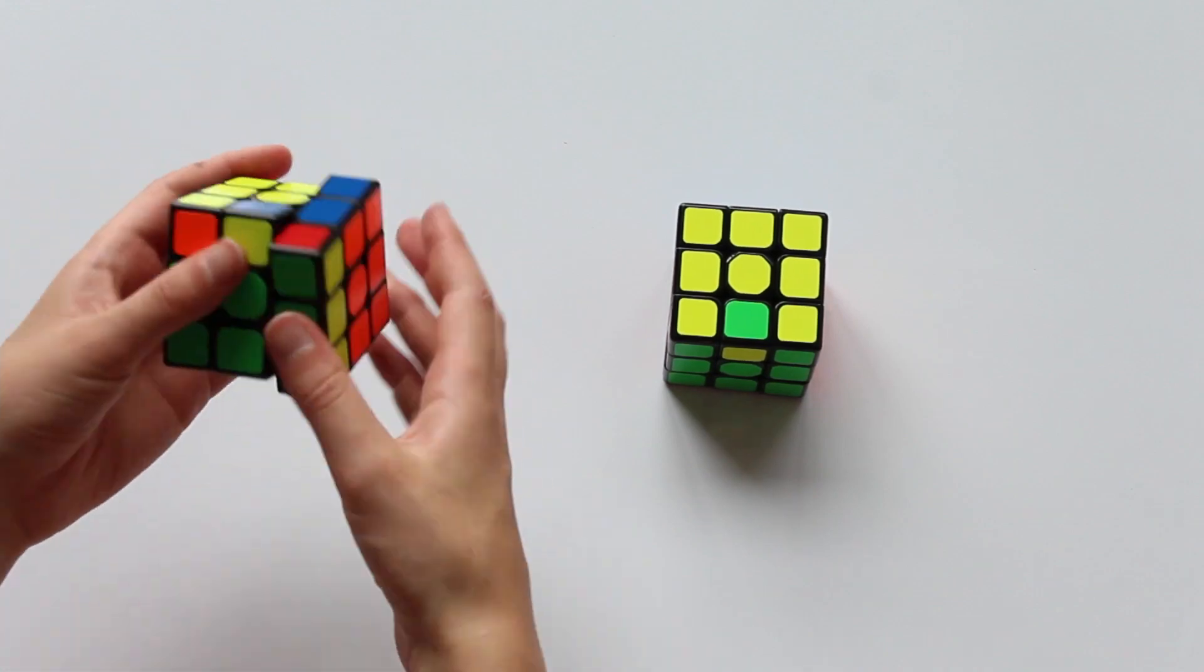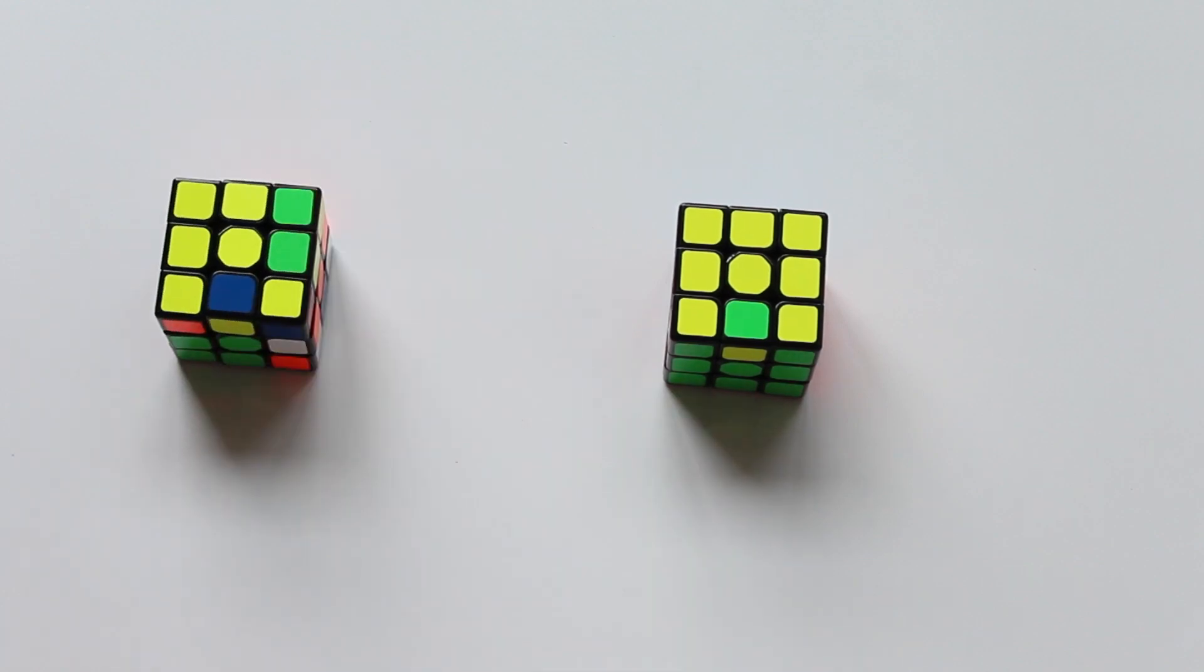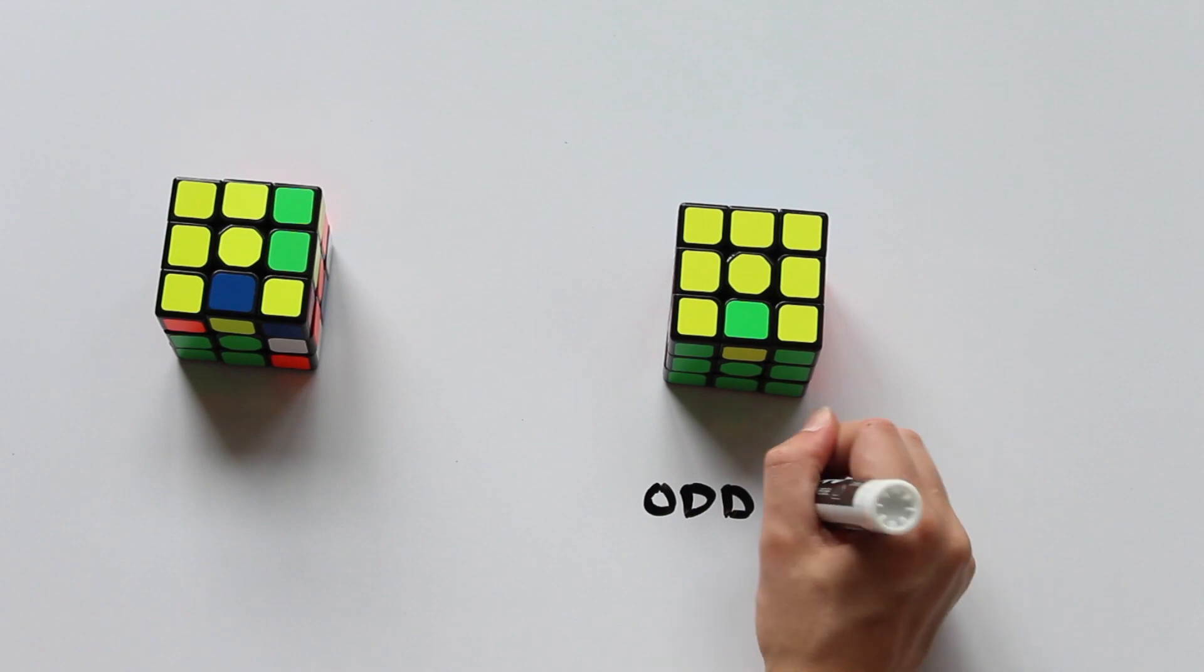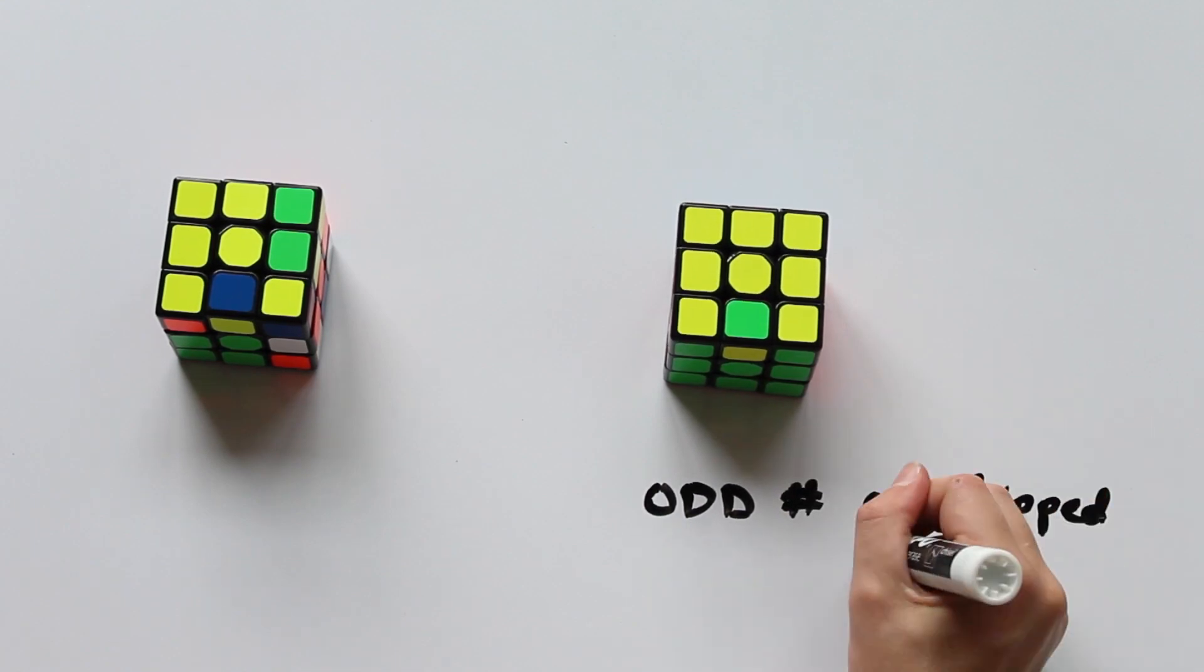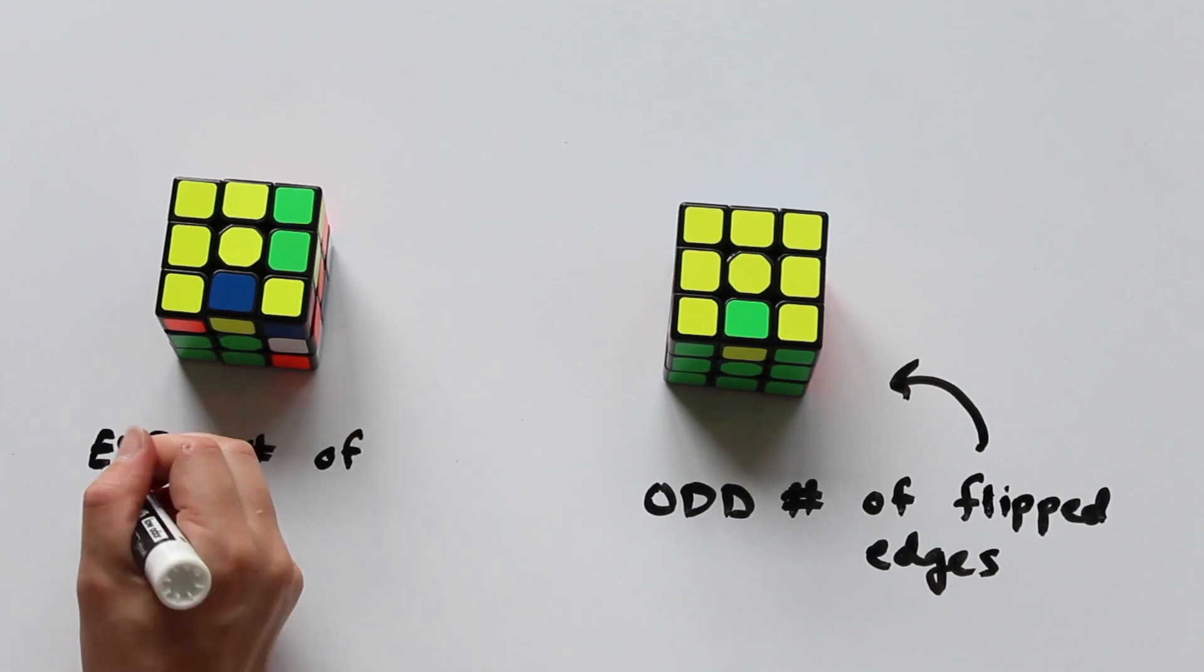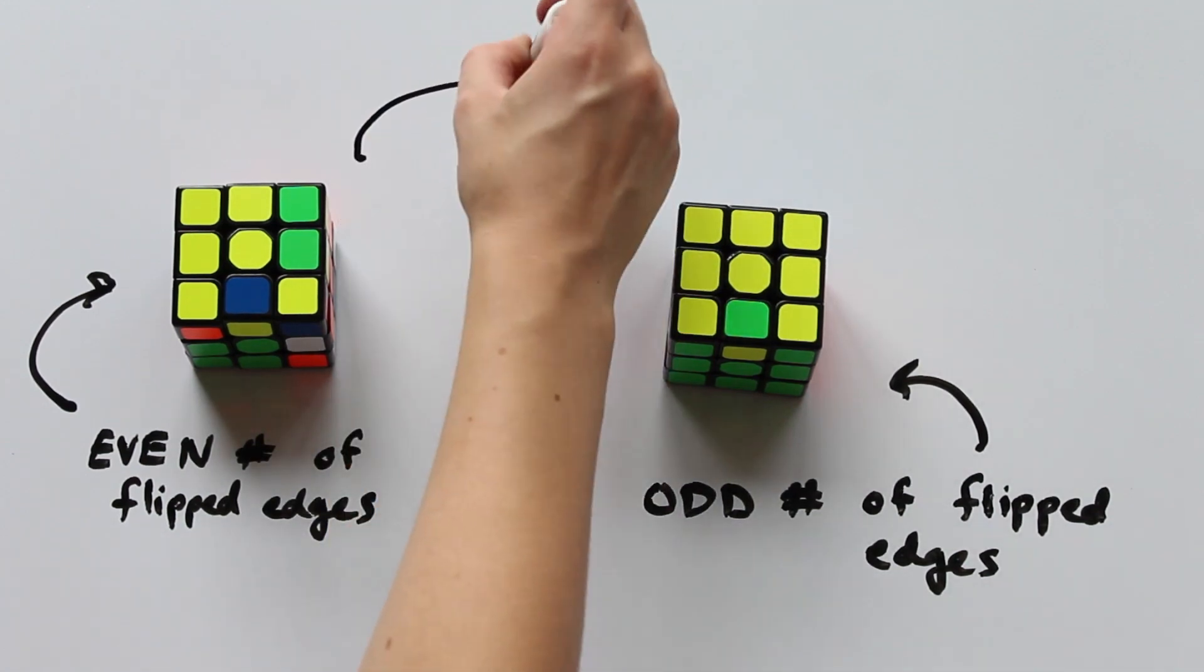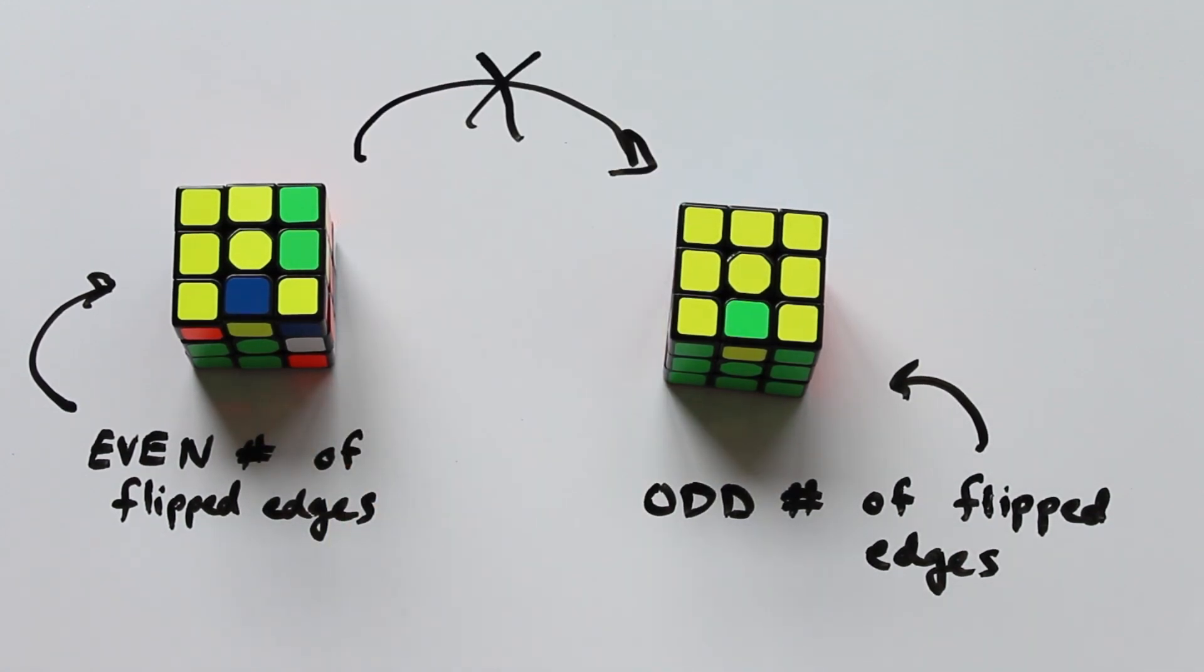Well, I can give it my best effort, but I'll never get it to work. We can show this with the same reasoning as we used to prove the fundamental theorem of cubology. The first cube has an even number of flipped edges. When we perform cube moves, this property will be preserved. But the second cube has an odd number of flipped edges, so we can never reach this arrangement from the first cube.